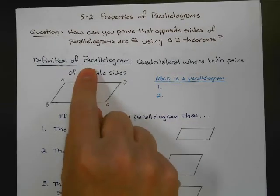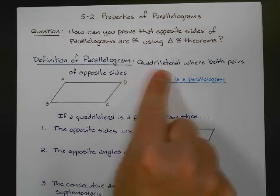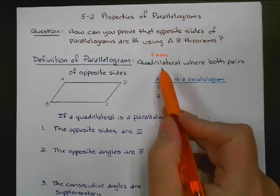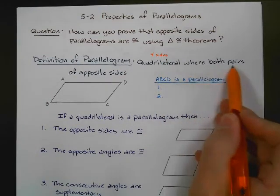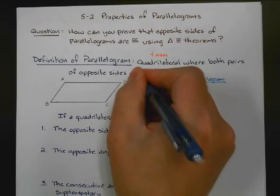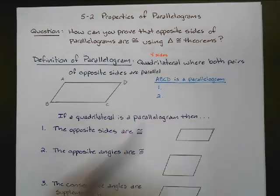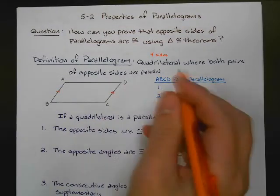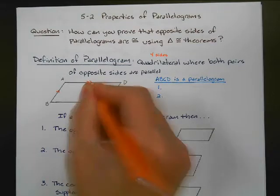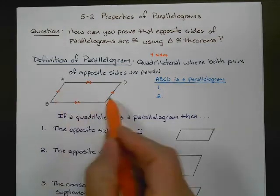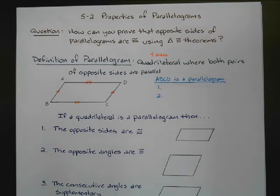Let's start with the definition of what a parallelogram is. A parallelogram is a quadrilateral — that just means it has four sides — where both pairs of opposite sides are parallel. That's why it's called a parallelogram, because we have opposite sides that are parallel. So AB is parallel to CD, and AD is also parallel to BC.